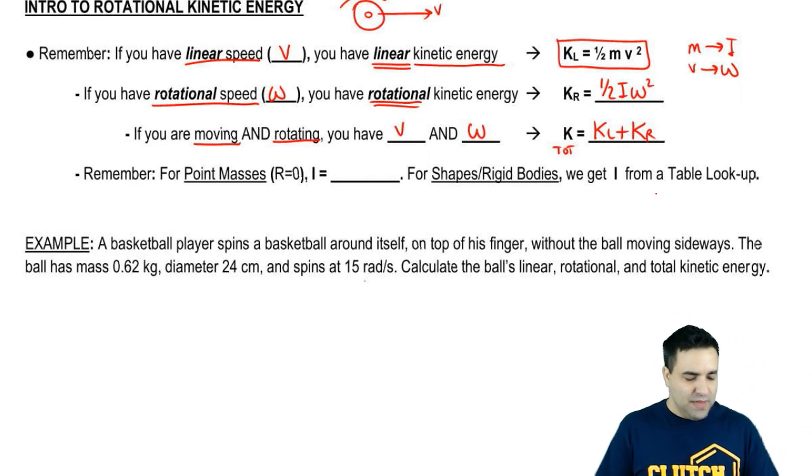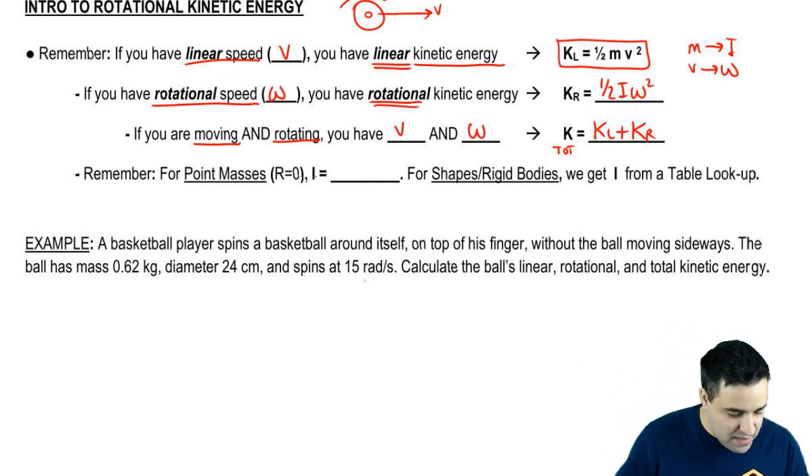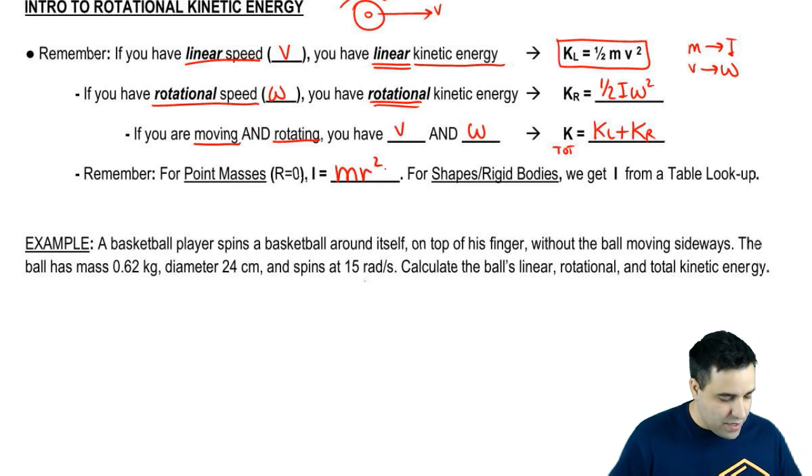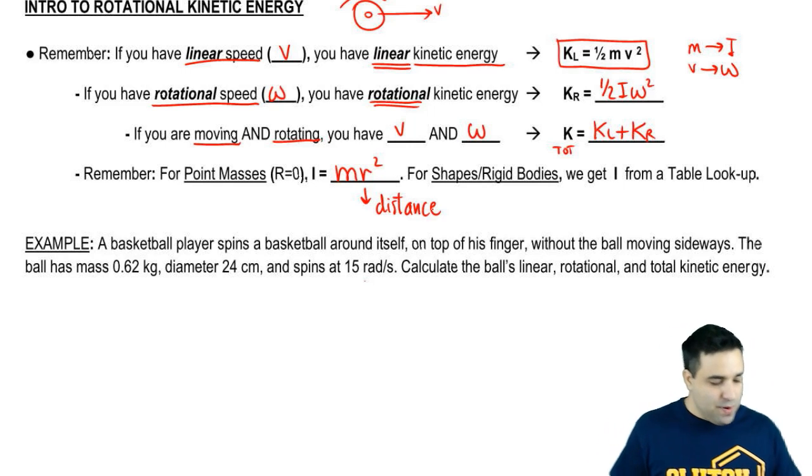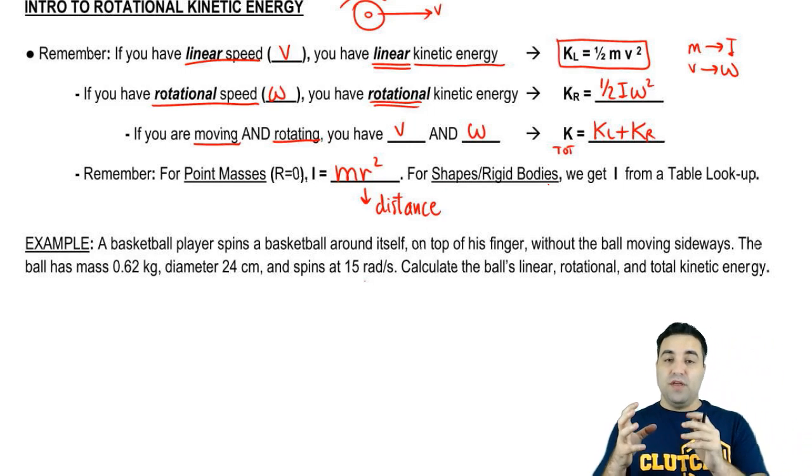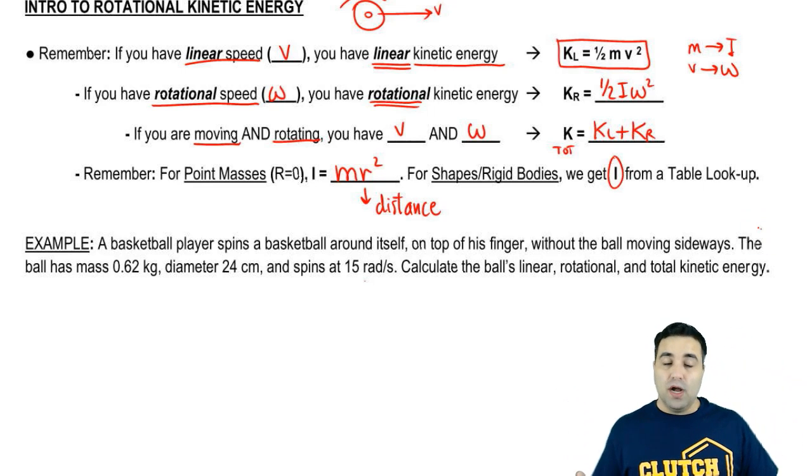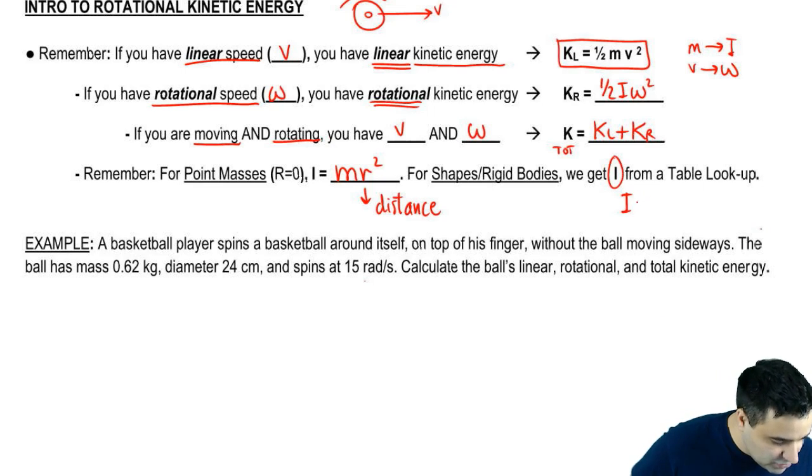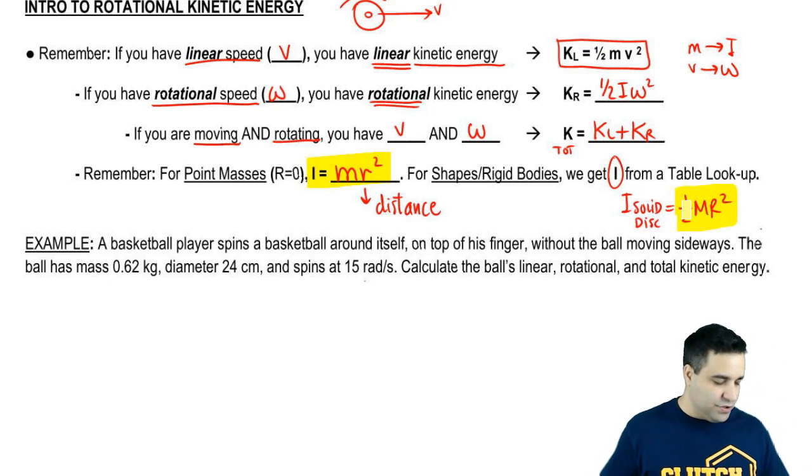And the last thing I want to remind you, we'll do a quick example, is that for point masses, point masses are tiny objects that don't have a shape, that have negligible size and radius. The moment of inertia I is Mr squared, where R is a distance between the object and the axis. Remember also that if you have a shape or a rigid body, we're going to get the moment of inertia from a table lookup. For example, if you have a solid cylinder or disk, the equation for that is half Mr squared. So point mass is always this and some shape will have a different equation each time.